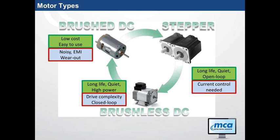There's typically a current regulation loop that needs to be included in the drive electronics, so it's a little more complicated on the drive and control side, but still relatively simple compared to a brush DC motor. Moving on to the brushless DC, with this you get a much longer life. It's certainly the quietest of the three motor types and commonly used in high power and high speed applications. The disadvantage is just the drive complexity — it typically requires a microprocessor with more horsepower, and the loop is often closed around current, voltage, or position in a servo application.